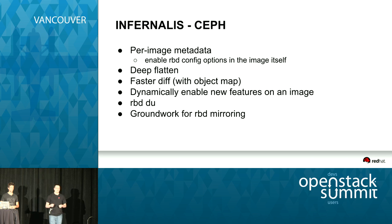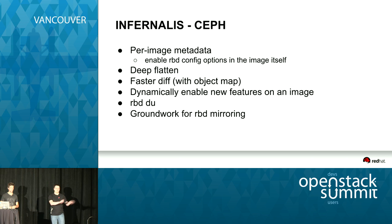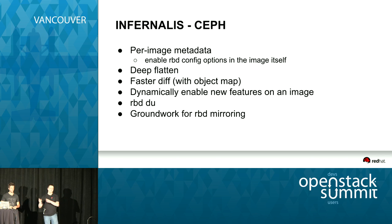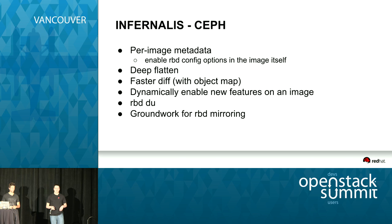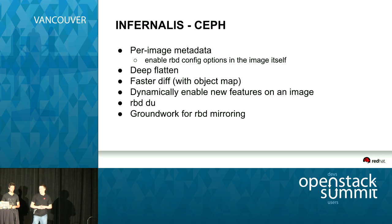One of the biggest features we're working on is RBD mirroring — basically asynchronous replication for RBD for disaster recovery. You have one site where images are being mirrored to a second site, keeping the same structure of images, so you'll eventually be able to fail over when a site goes down and bring up the second site with exactly the same things running. This is a very large project, so we're laying groundwork. It's possible it'll be experimentally usable in Infernalis, but it likely won't be fully usable until Jewel.